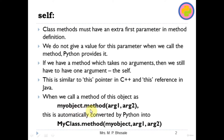At the time of execution, Python automatically converts obj.method(args) into MyClass.method(obj, args), where the object name replaces self. So if I have the method name 'method' and my class object is obj, then obj.method(params) is converted by Python to MyClass.method(obj, params). I think now you have got an idea about this self parameter.